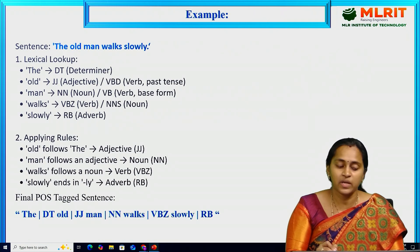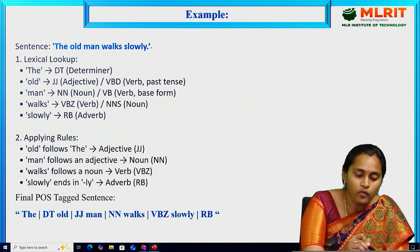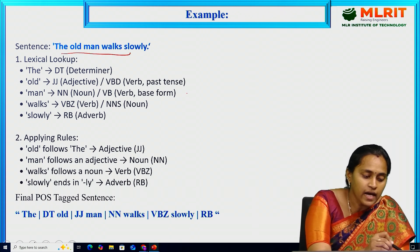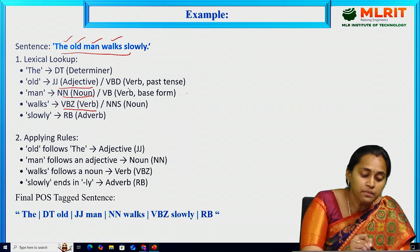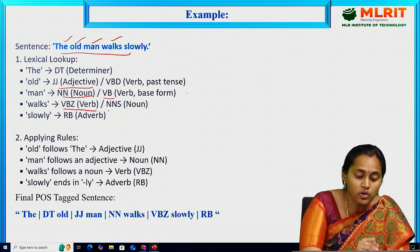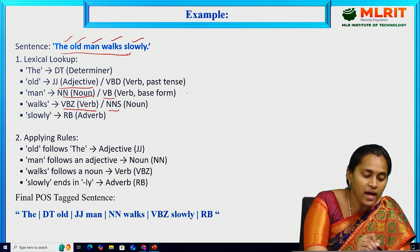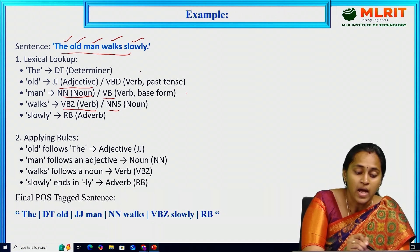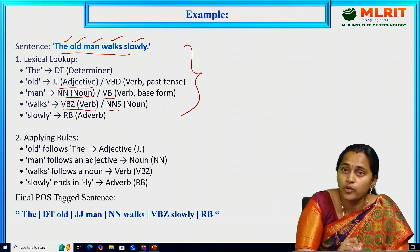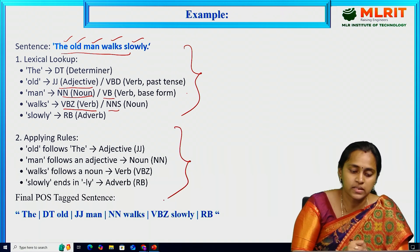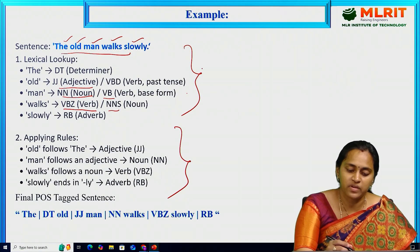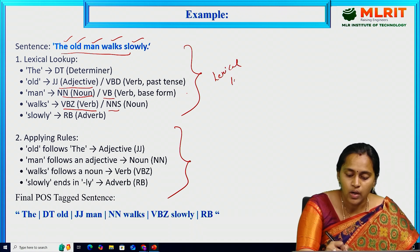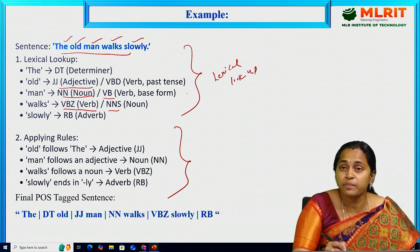Let's see the example. I am taking the sentence: 'The old man walks slowly.' Here 'the' is a determiner, 'old' is an adjective, 'man' is a noun, 'walks' is a verb (sometimes called a noun), and 'slowly' is an adverb. This is a lexical lookup. By this lexical lookup, we are applying the rules — this is the two-stage process of lexical lookup and rule-based disambiguation.